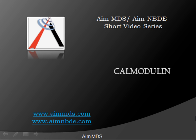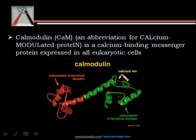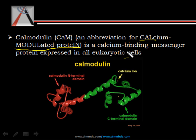Welcome to the short video series. In this video we'll be talking about calmodulin. Calmodulin is an abbreviation for calcium modulated protein. It is a calcium binding messenger protein which is expressed in all eukaryotic cells.